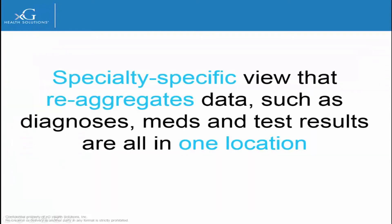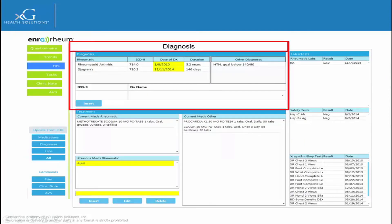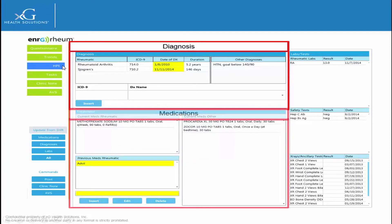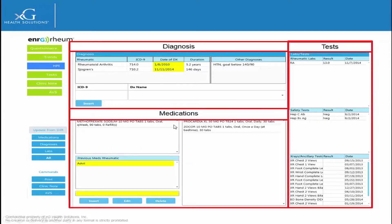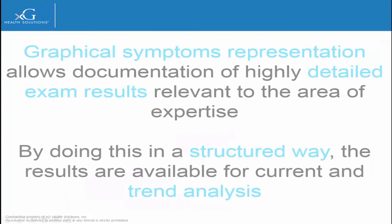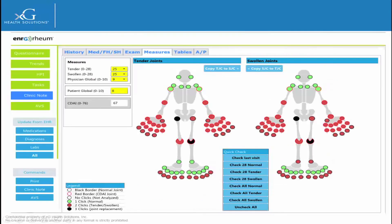The Rheumatology app creates a specialty-specific view that re-aggregates data, such as diagnosis, meds, and test results pertinent to that specialty, all in one location. Graphical Symptoms Representation allows specialists to document highly detailed exam results relevant to their area of expertise, such as the results of a joint exam shown here. By doing this in a structured way, the results are available for current and trend analysis.